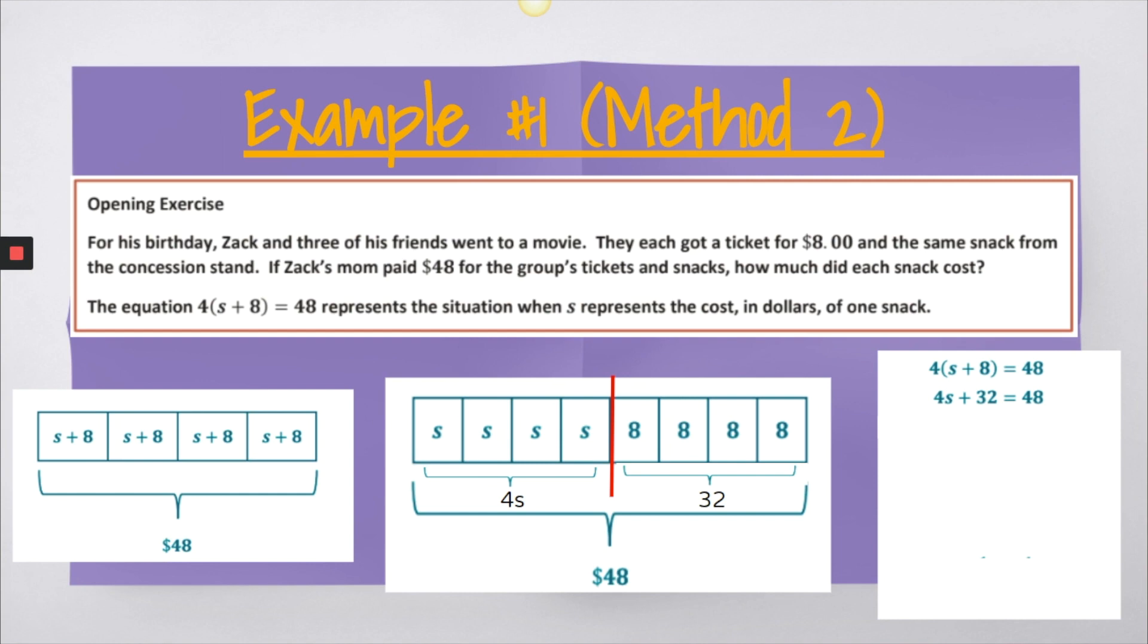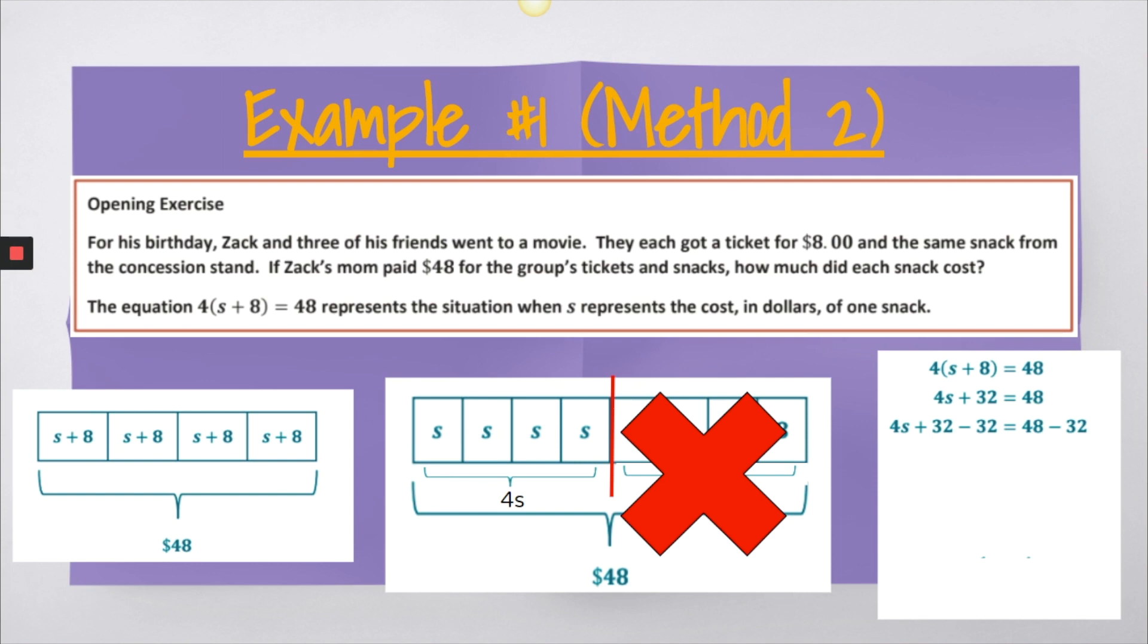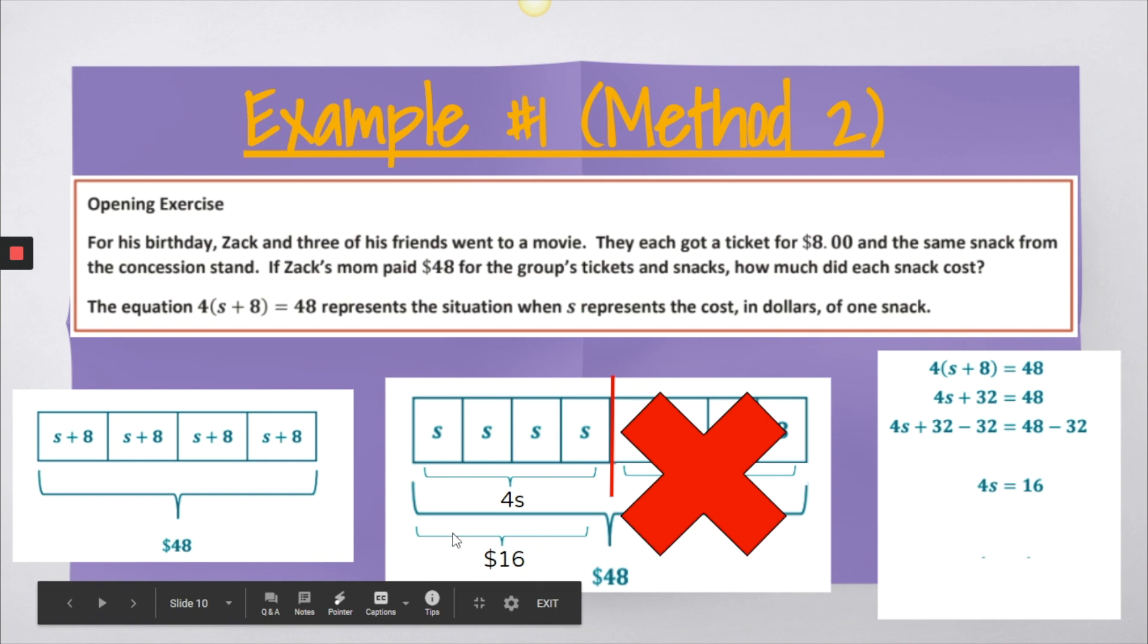Algebraically, what that would look like is 4S plus 32 is equal to 48. Now, my next step in solving this would be to, since I know the value of this side, would be to take it away from the total and that will leave me whatever is left on this side. So in the equation, I would subtract 32 from both sides. This side would go away. And what I would have left after I subtracted 32 from both sides is that 4S would equal 16. So the amount that's left after I took that 32 away is going to be $16.